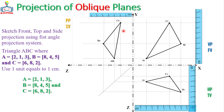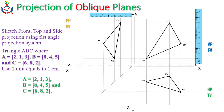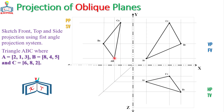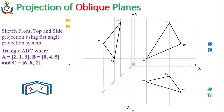So the projections of triangle ABC on the front, top, and side views can be constructed in this way. If you want to know more about projections of planes — such as normal planes, inclined planes, and others — you can find many related videos on our channel. If you enjoyed the video, please like, share, and subscribe. Thank you for watching, and see you soon.